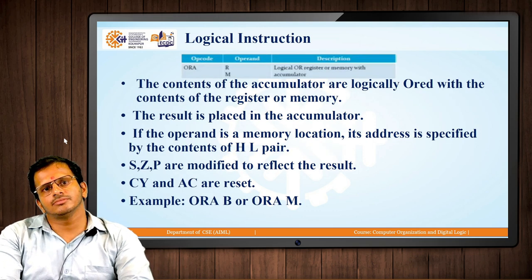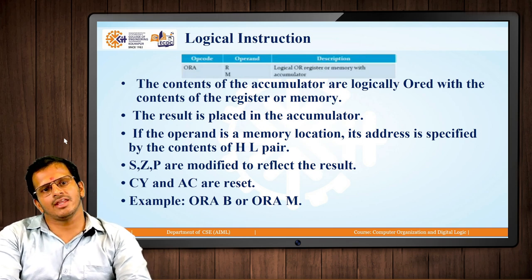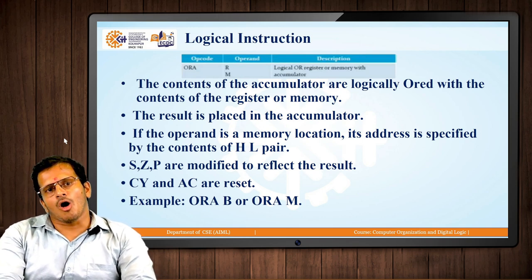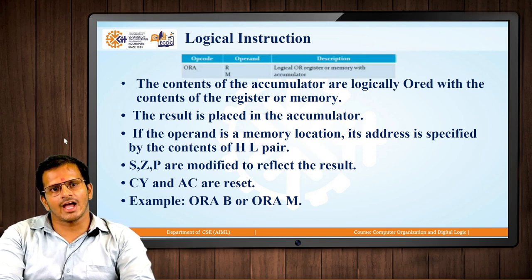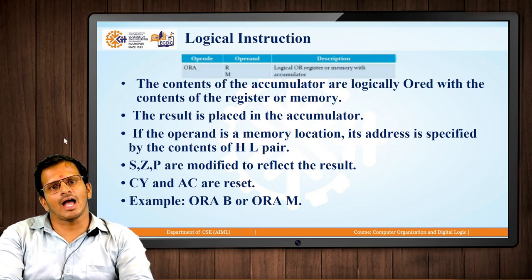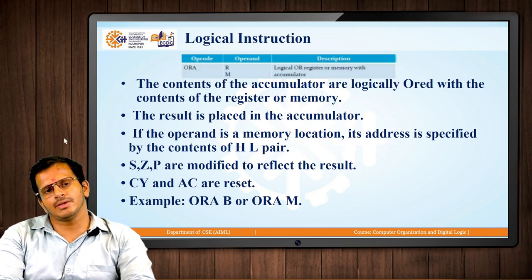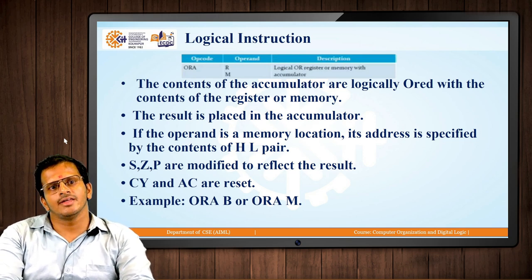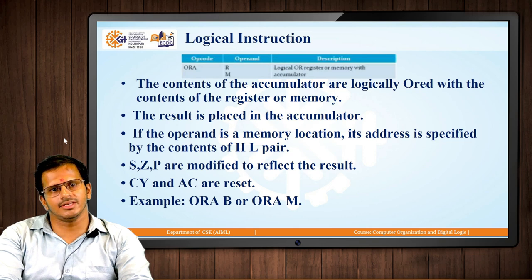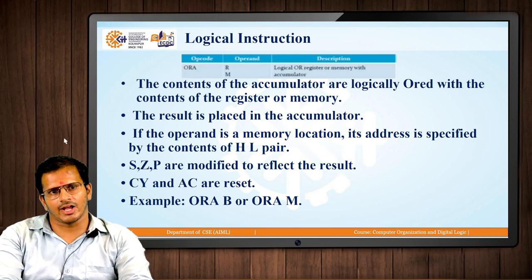The next instruction is ORA. ORA is similar to ANA, but instead of ANDing we are ORing the contents of the accumulator with the register and storing the result in the accumulator. ORA M ORs the memory location pointer content, represented by the HL register, with the accumulator and stores the result in the accumulator. The S, Z, and P bits of the flag register are modified. CY and auxiliary carry are reset. Examples include ORA B, C, D, E, H, or L, and ORA M.